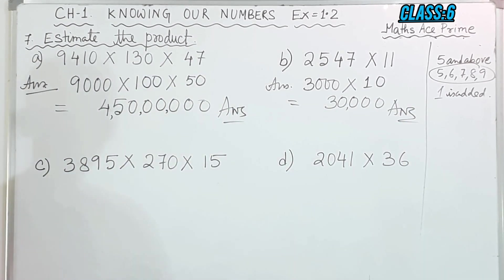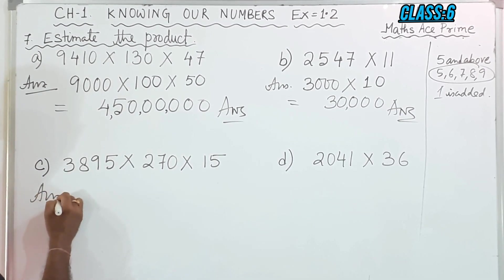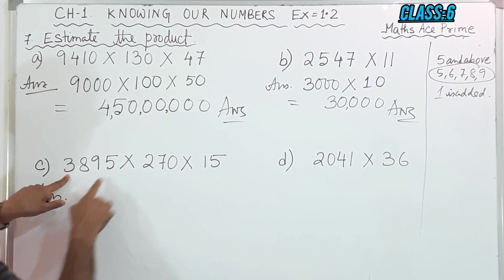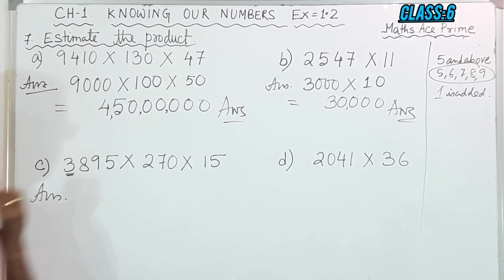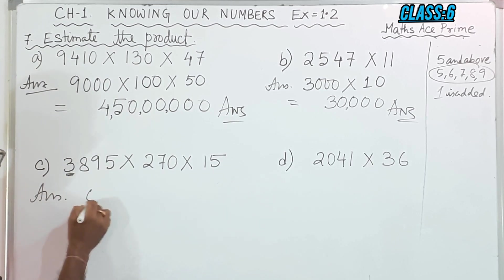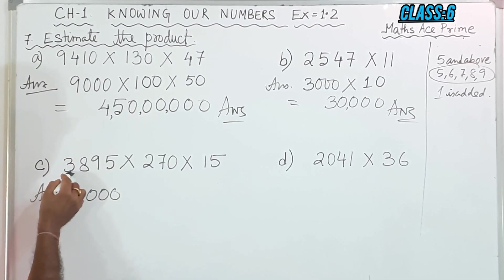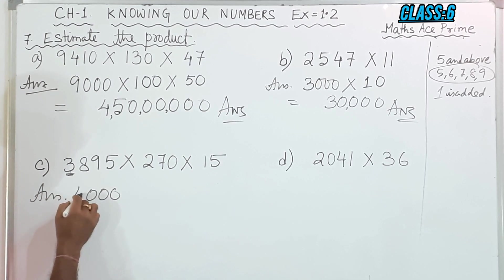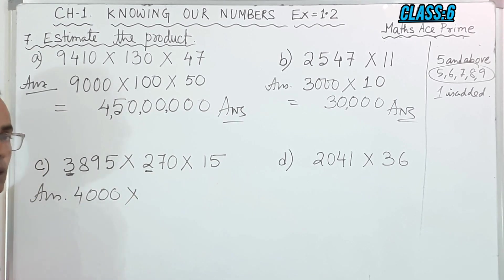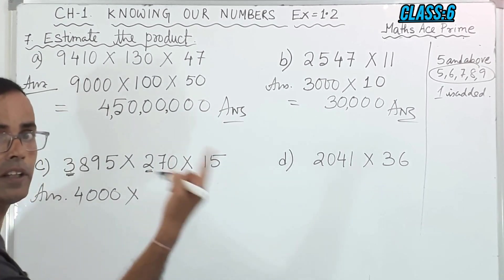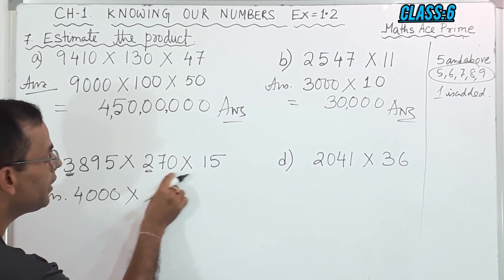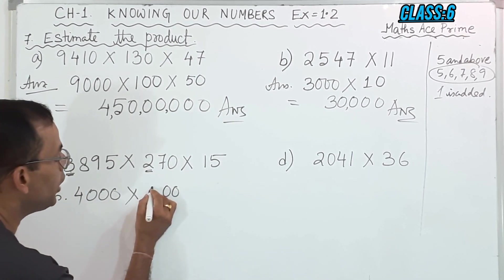Now let us come to answer C. Here we have 3,895. I will round off here. The next digit is 8, which is 5 and above, so after that all digits become 0 and this 3 will have 1 added — so it becomes 4,000. Then for the second number, I will round off here. The next digit is 7, so all remaining digits become 0 and this 2 will become 3.